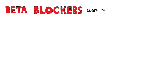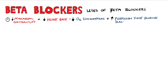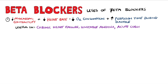Now let's look at the uses of beta-blockers. First, the decrease in myocardial contractility and heart rate means they decrease oxygen consumption, and due to the slower heart rate there is a longer perfusion time during diastole. Therefore, we use beta-1 selective agents in chronic heart failure, unstable angina, acute coronary syndromes, and hypertrophic obstructive cardiomyopathy.